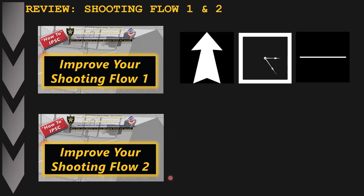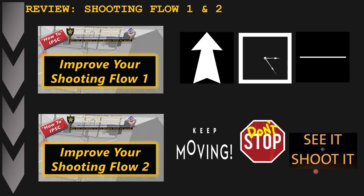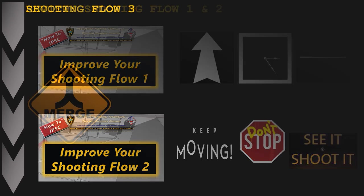In the second how-to video we added three more basic principles. The first was to keep moving as much as you can — don't stop, and if you need to stop, limit the total number of stops on a particular stage. The third principle in the second series was: if you see a target, shoot the target. Those were the six basic principles explained in detail in my previous two videos.